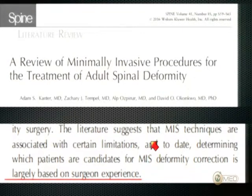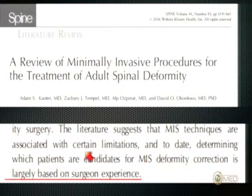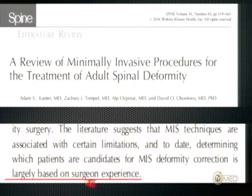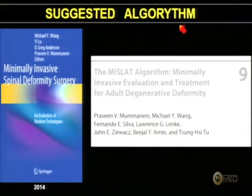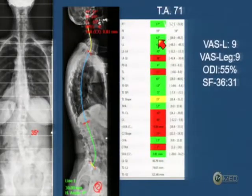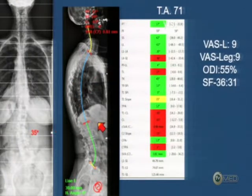When we can, we have to think about doing something minimally invasive in adult spinal deformity. Looking at very recent literature, MIS deformity correction is largely based on surgeon experience — this is very important in my opinion. We have here Michael Wang, who has written a book with other authors and suggested an algorithm for decision making. I want to show you three different cases.